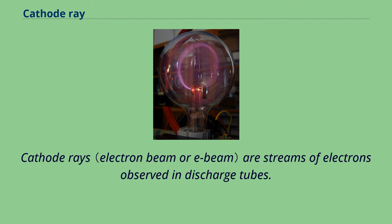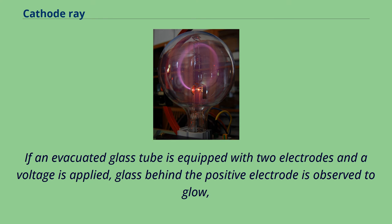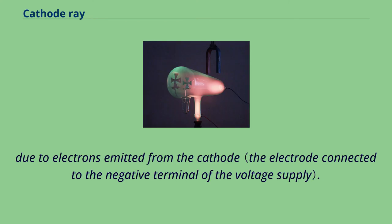Cathode rays are streams of electrons observed in discharge tubes. If an evacuated glass tube is equipped with two electrodes and a voltage is applied, glass behind the positive electrode is observed to glow due to electrons emitted from the cathode.